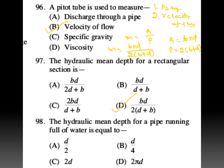Hydraulic mean depth for a pipe running full of water: area = (π/4)D², perimeter = πD, so hydraulic mean depth = D/4. From the options, B is your answer.